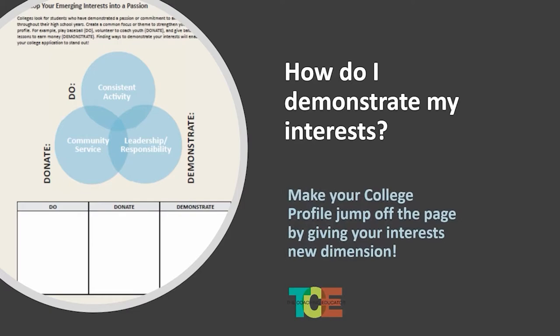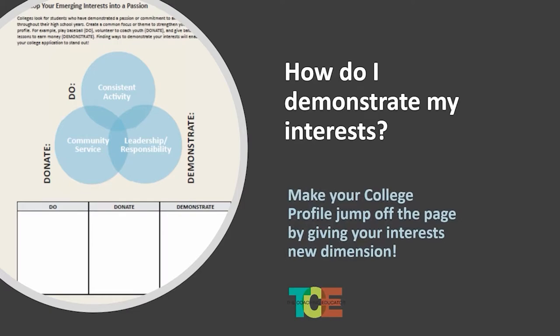You can almost use a Venn diagram — as you can see on the screen — to show how you demonstrate interest. There's a part that you do, which is a consistent activity. There's a part where you donate, which is flipping it into community service. And there's a part where you demonstrate, becoming a leader and expert. All three intersect, and that's what makes your college profile jump off the page.